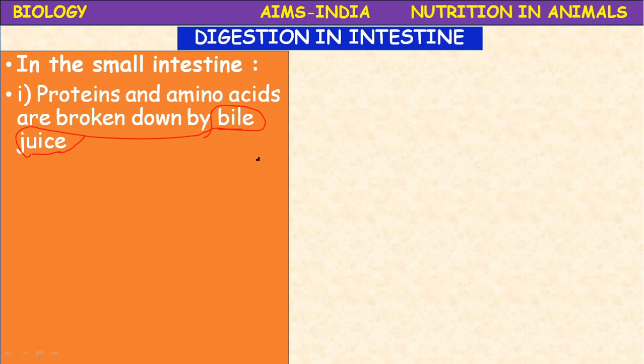Fats, which are very complex compared to carbohydrates and proteins, are converted into micro colloidal substances — small particles of fat — by the action of bile salts. These bile salts are sodium cholate and sodium deoxycholate. This process is called emulsification, and after emulsification the fats are ready for digestion.